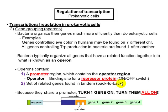Near the promoter region, there is also an operator region. This operator region tells the whole system whether to go on or to stop. There are several ways an operon can work: sometimes you have inducible operons, other times repressible operons. Importantly, once you turn one gene on, all of them turn on, since they are in sequence.